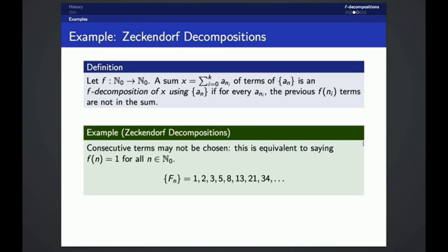And what this means is that if we pick any term in the Fibonacci numbers, and if that term is in our decomposition, then we're not allowed to use the single term before it, the one term before it. That means that no consecutive terms can be chosen. So that's how we represent the Zeckendorf decomposition using an F decomposition.